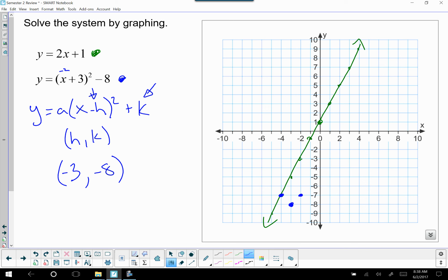The next value we could plug in would be negative 1. Negative 1 plus 3 is 2, 2 squared is 4, and 4 minus 8 is negative 4. So that's negative 1, negative 4. Its corresponding point would be negative 5, negative 4. And let's do one more.